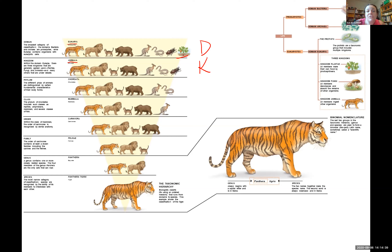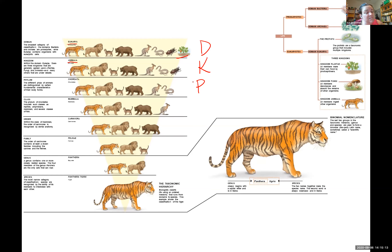Below kingdom, the next group is called a phylum. The specific phylum the tiger is in is phylum Chordata. I don't care that you memorize the name Chordata, but I do care that you understand this is smaller than a kingdom. Phylum Chordata includes any animal that has a backbone, so we lose our beetle because insects don't have backbones. The tiger, lion, cat, bear, kangaroo, and snake are all still there because all of those organisms have a backbone.